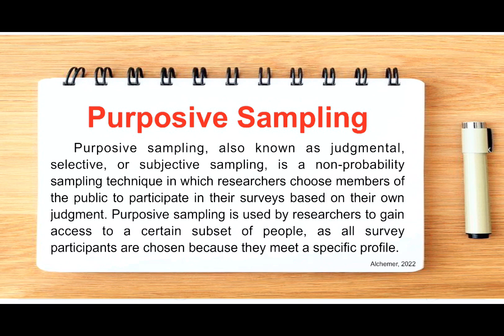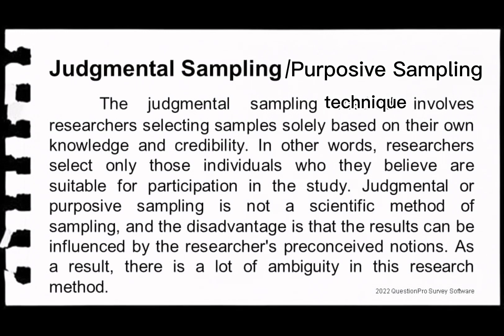Purposive sampling, also known as judgmental, selective, or subjective sampling, is a non-probability technique in which researchers choose members of the public based on their own judgment. This strategy requires researchers to have previous knowledge of their study's goals in order to correctly pick eligible participants. Purposive sampling gives access to a certain subset of people, as all participants meet a specific profile. The disadvantage is that results can be influenced by the researcher's preconceived notions, leading to ambiguity in the findings.